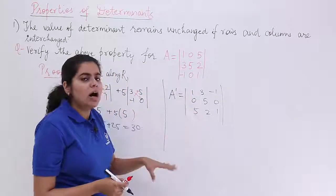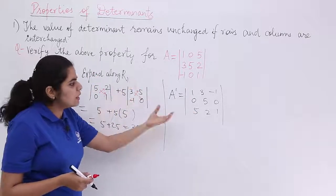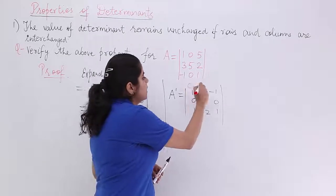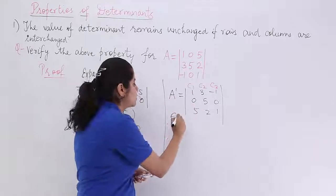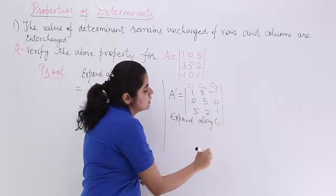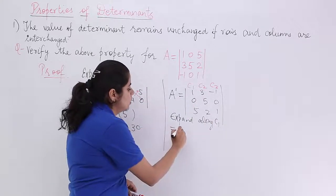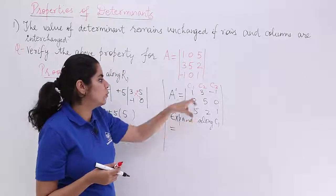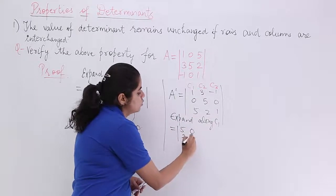Now let's evaluate this. First, we evaluated along the first row. This time, let's evaluate along the first column C1. This is C1, C2, C3. C1 is the first column. Expand along C1. What happens? 1 into something is that thing. Leave 1. You have a sub-determinant: 5, 0, 2, 1.